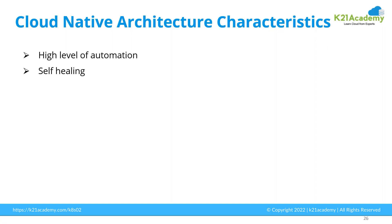Cloud native architecture is also self-healing. This is one of the most important and best features that cloud native architecture has. If you are running an application on three containers on high availability, and these three containers run on three physical servers, and one of those physical servers goes down, it immediately spins up another container on another available node. Within two to three seconds the pod will be recreated with all the data and business logic.